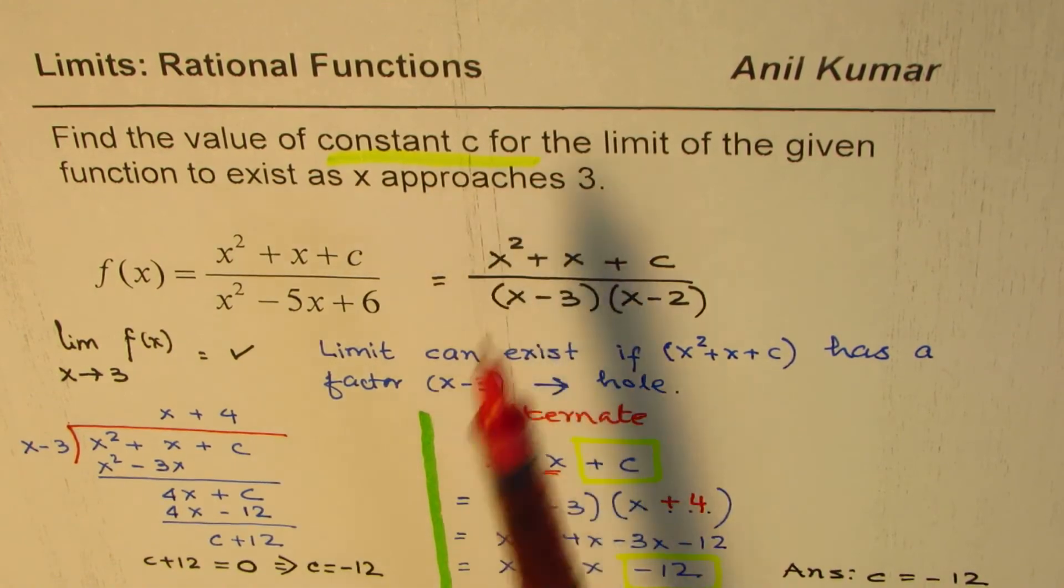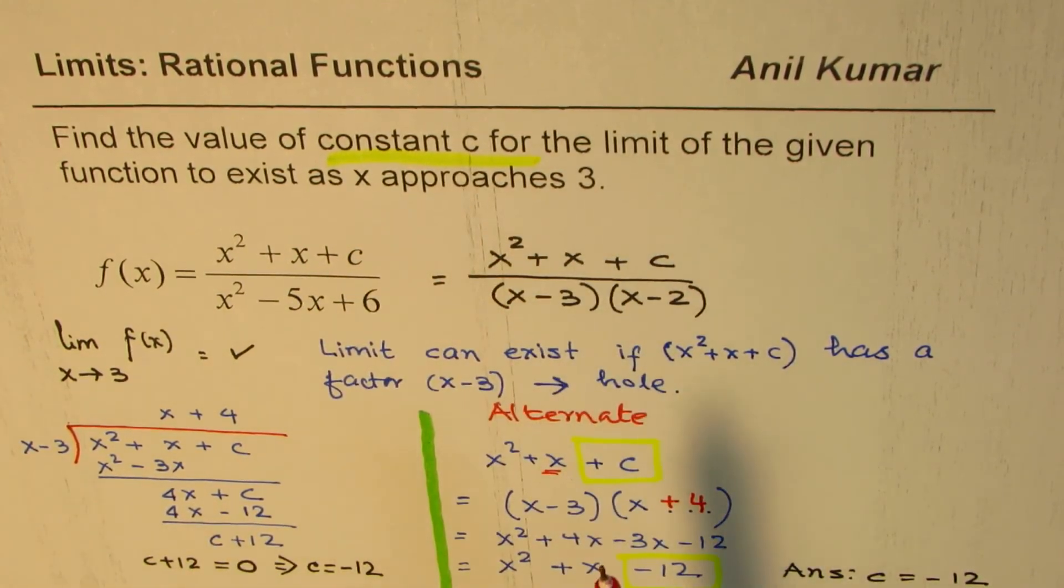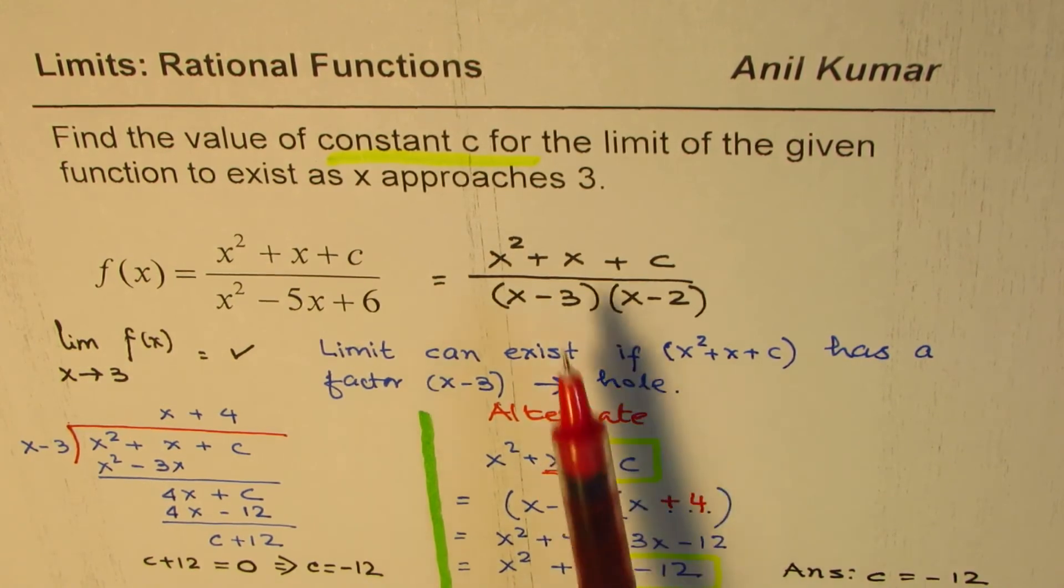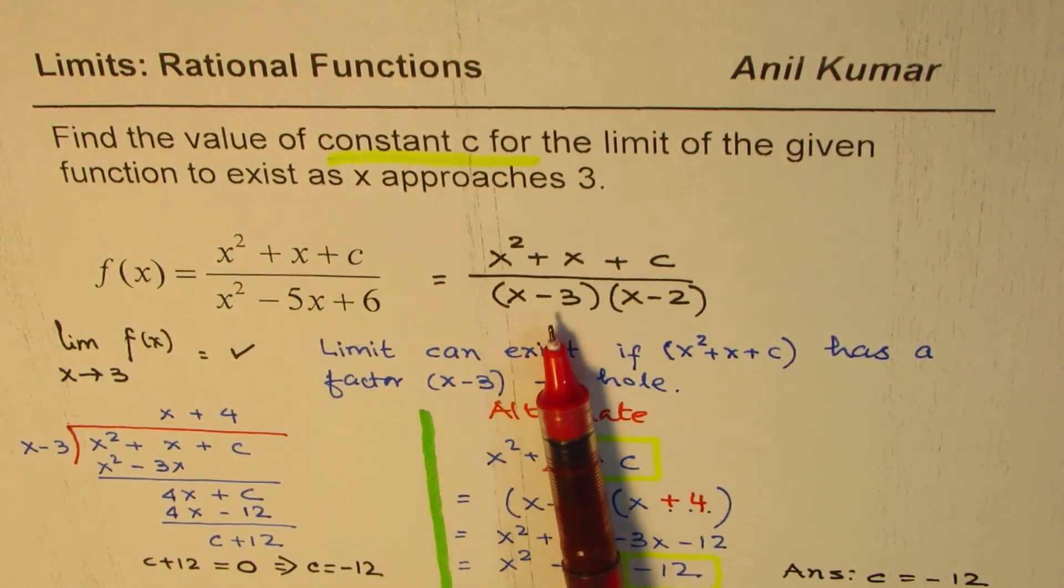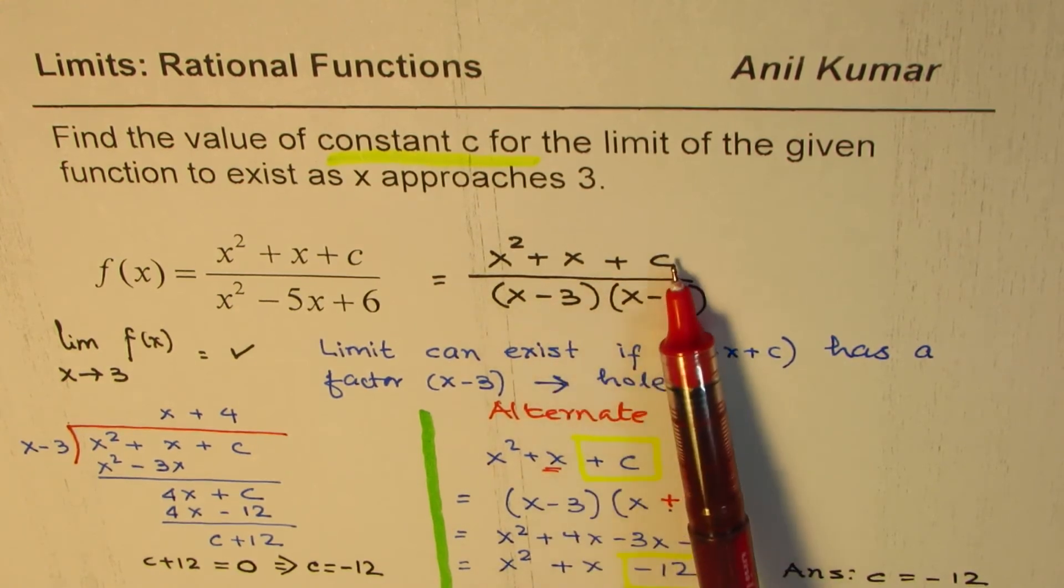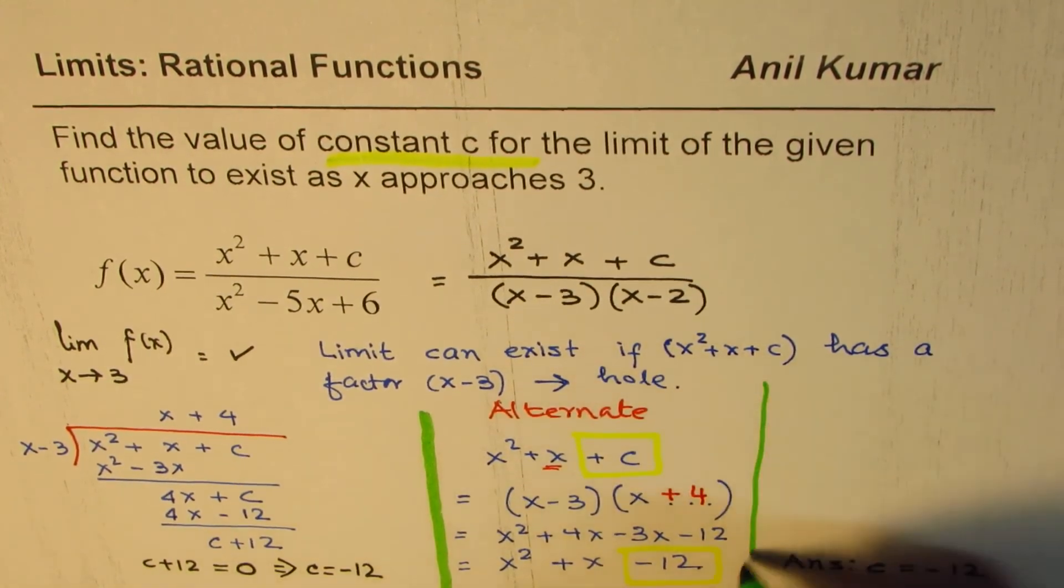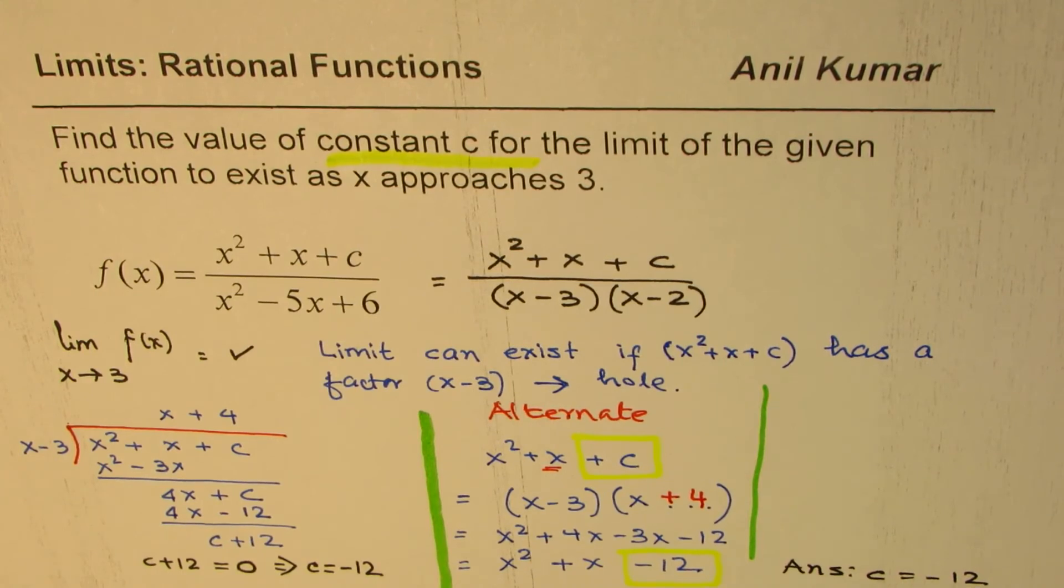When we are trying to say that the limit should exist as x approach a value, in that case, if we have a factor in the denominator, if we create a similar factor in the numerator, they cancel out. So let's now solve this and see what the limit could be. It is just an extension to this particular question.